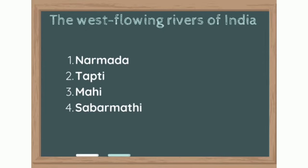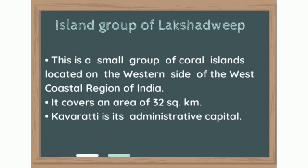State the west flowing rivers of India. The west flowing rivers of India are Narmada, Tapti, Mahi and Sabarmati.